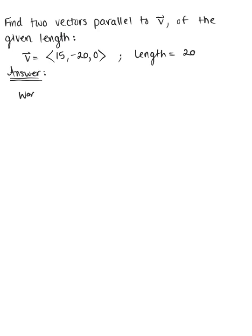So here, let's think about what we want. We are looking for some new vector, we'll say U. So U is equal to what? And it's such that U and V are parallel. And we also want this new vector U to have a length or a magnitude of 20.